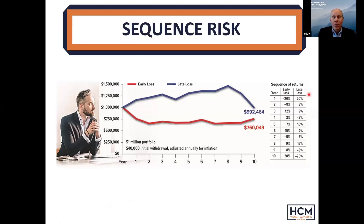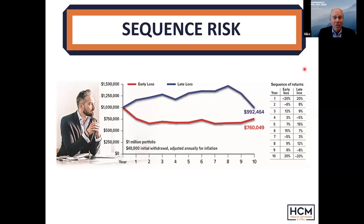However, when you look at our retiree — most people are familiar with the 4% rule — in this case we started with a million dollars and took out $40,000 a year. And depending on which sequence of returns you get, we have almost a quarter of a million dollars difference — about $230,000 difference in balances between the two sets of numbers.